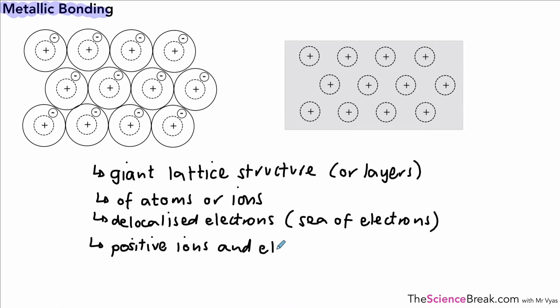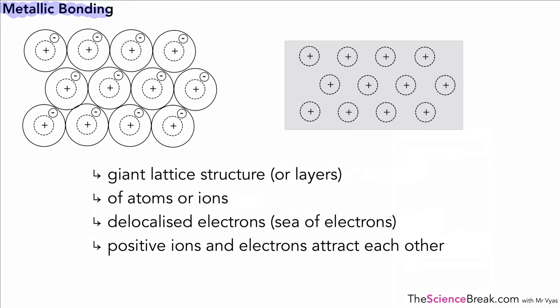And very importantly, lots of students miss this out when they're talking about metallic bonding: the positive ions and the electrons attract each other, and that's what forms the strong metallic bond between those ions. Okay, we could tidy that up a little bit so it's slightly easier to read, and there we have the way we would describe metallic bonding.